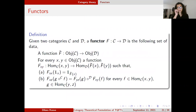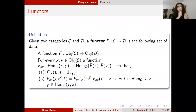We also need the idea of a functor. Given two categories, a functor relates them. A functor maps all objects of C to objects of D, and every morphism between X and Y to morphisms between the images of X and Y. It respects identity and composition, thereby preserving the categorical structure.